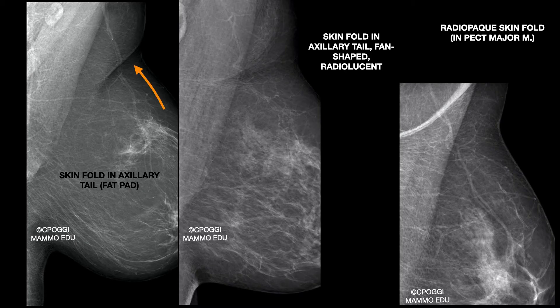This fold is due to a fat pad, not easily removed, and not necessarily correlated to a high BMI. Here you can see a fan-shaped fold, radiolucent, not so influential on the radiologist's performance.